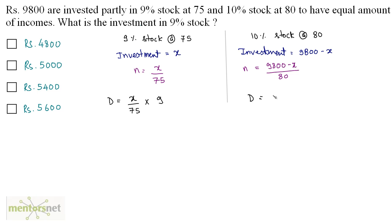Here the dividend will equal 9,800 minus X divided by 80 times the dividend is 10 on one rupees 100 face value, so times 10.